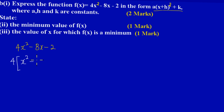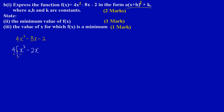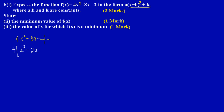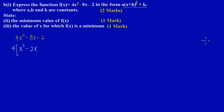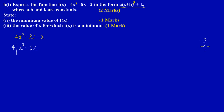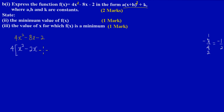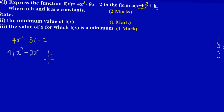Now for the constant term: 4 into -2 — negative 2 divided by 4 gives us negative one-half. So after factoring out 4, what we are left with inside the bracket is x² - 2x - ½.